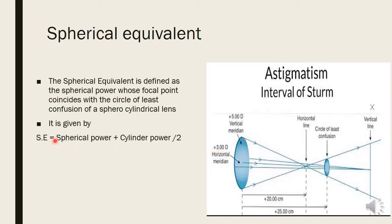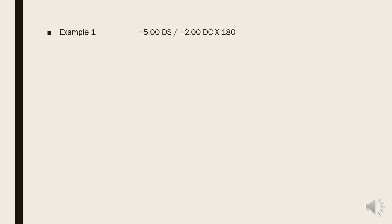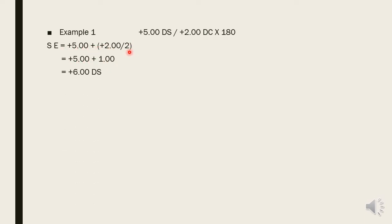The formula is: Spherical Equivalent = Spherical Power + (½ × Cylinder). For example, plus five with plus two diopter cylinder at 180 degrees: one meridian is plus five, the other is plus seven. Applying the formula: plus five plus (two divided by two) = plus five plus one = plus six diopters. The spherical equivalent is plus six, falling exactly between plus five and plus seven.